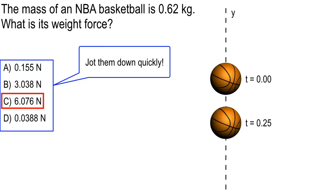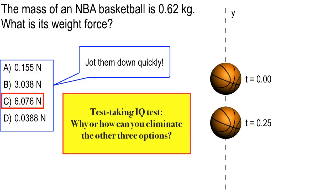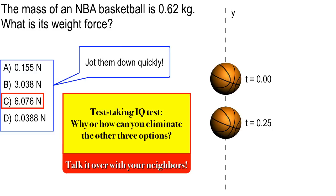Make a note of the NBA basketball, 0.62 kilograms. Our next question is going to be an alphanumeric question. Why or how can you eliminate the other three options? Right now, what I want you to do is talk it over with your neighbors. If somebody is sitting next to you that you don't know who they are, make friends, talk it over. Why is it that you can eliminate A, B, and D from this set? Go ahead and do that for a minute.